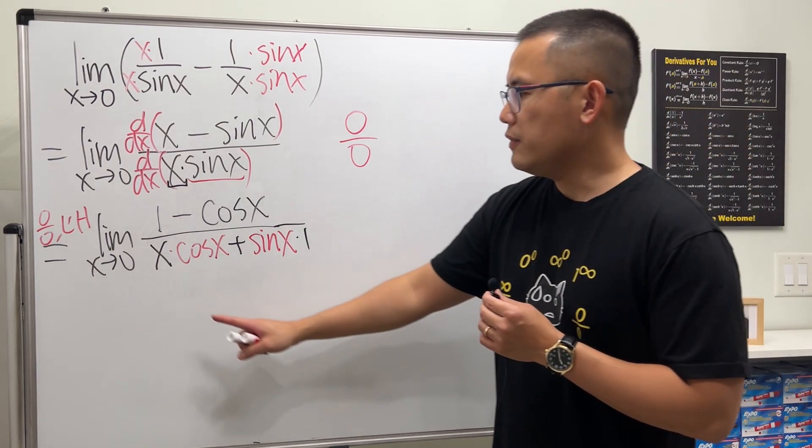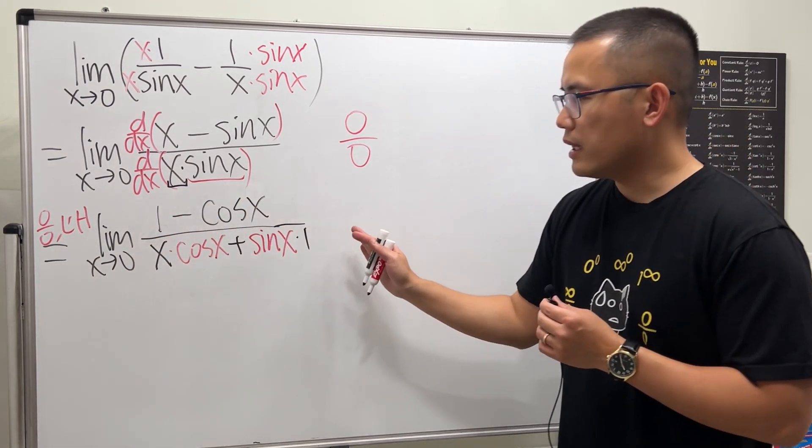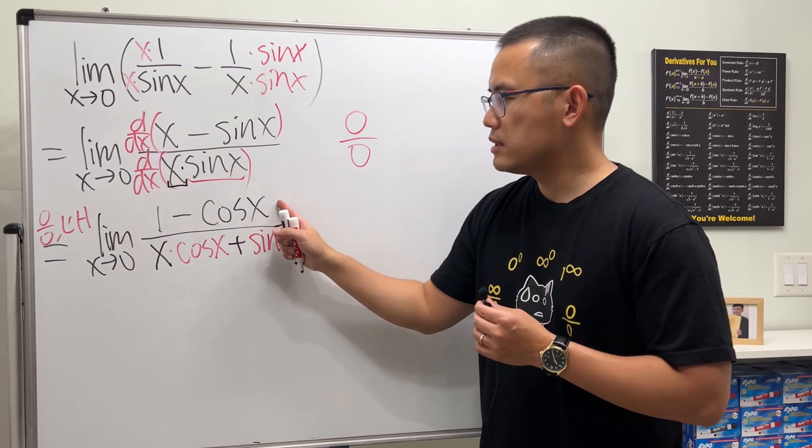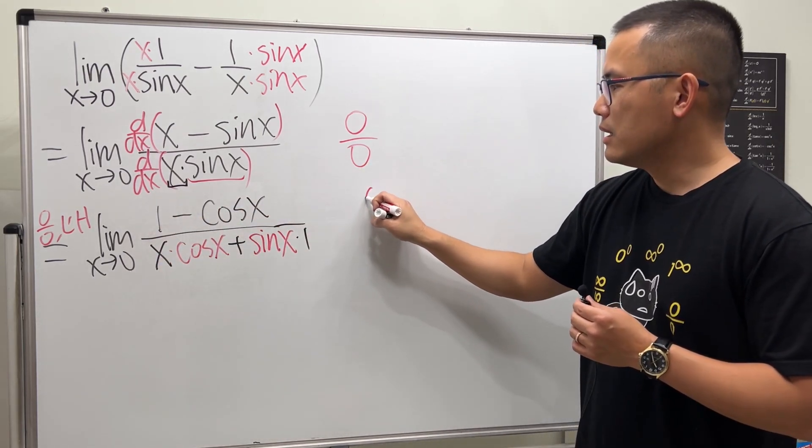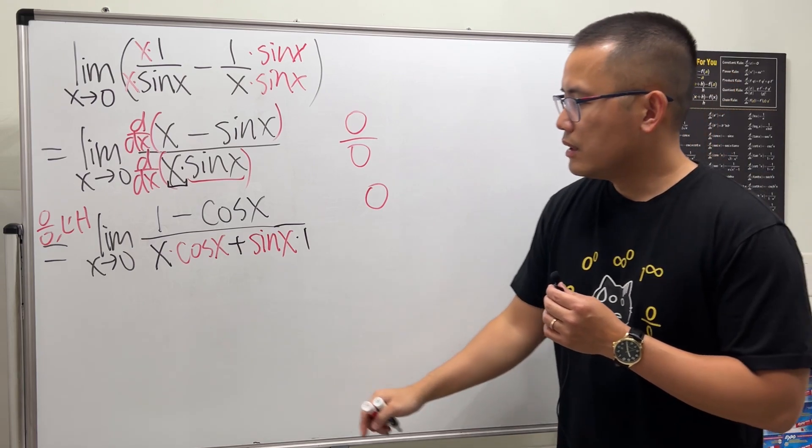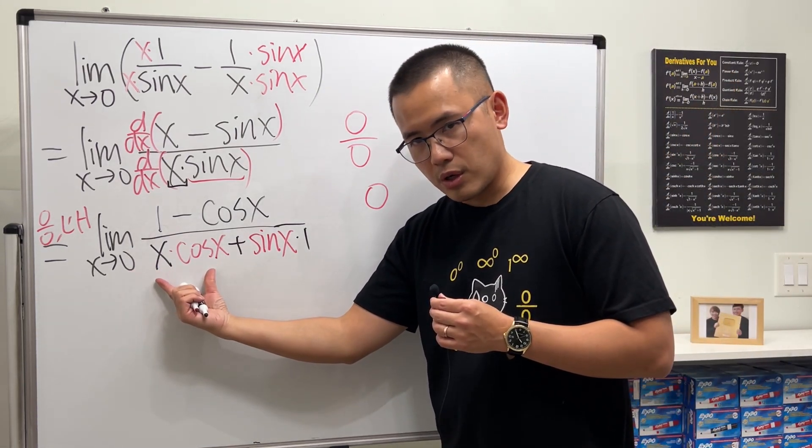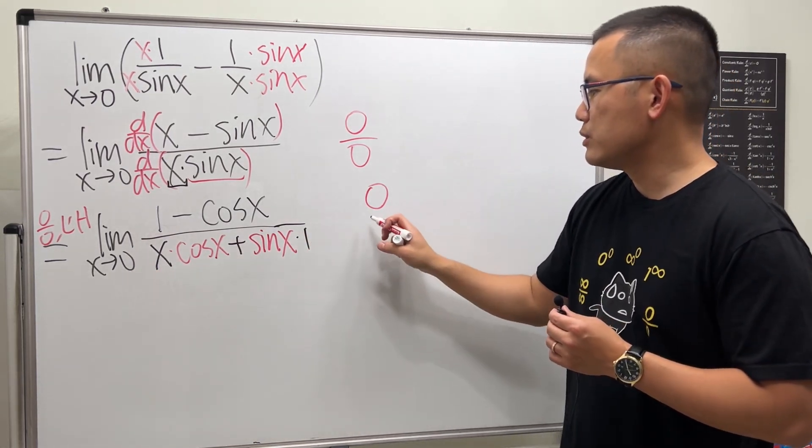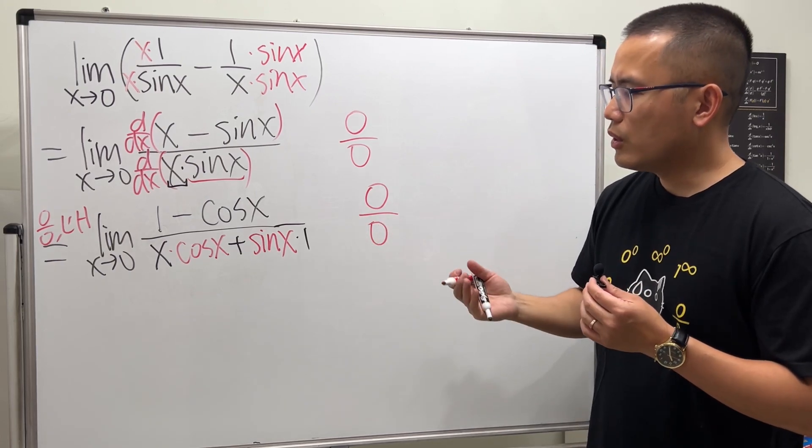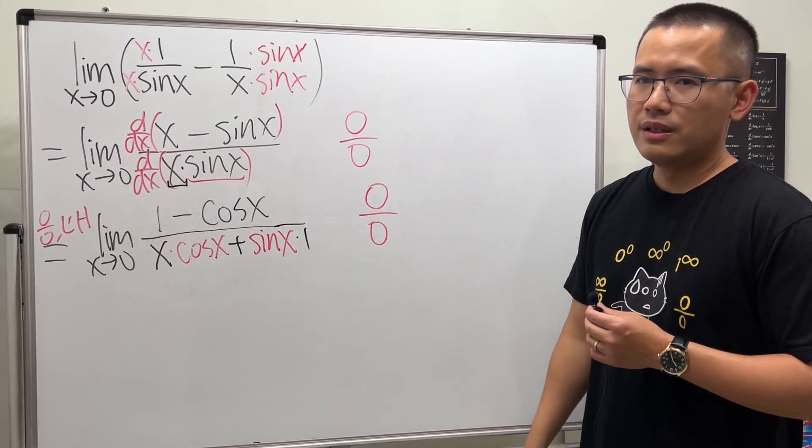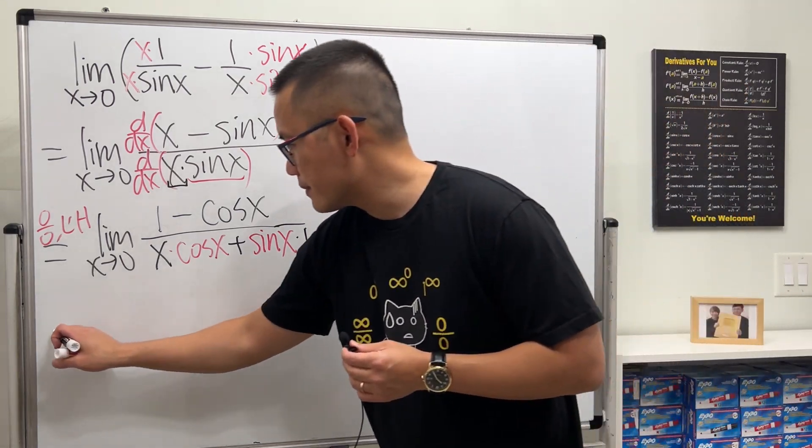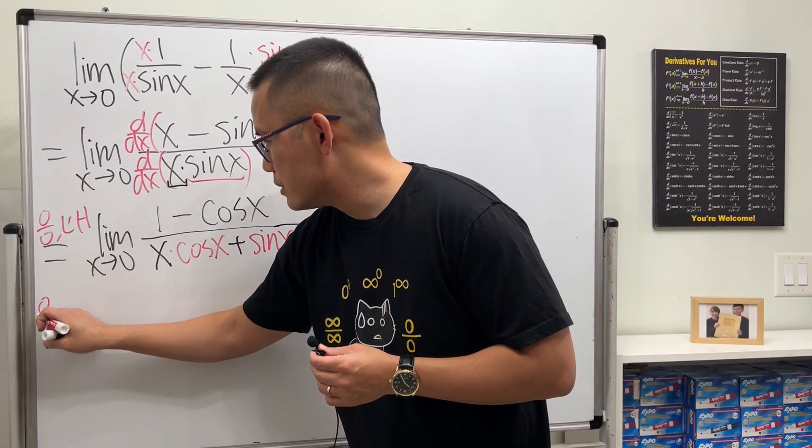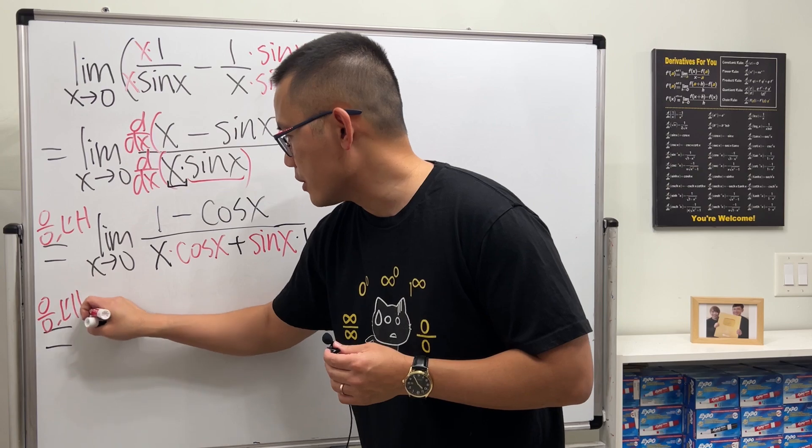Okay, now if we put zero into all the x's, cos(0) is one and we will just have one minus one on the top, again is zero. If we put zero in here that will be zero, if you put zero in here that will be zero. So we have zero over zero. L'Hôpital's rule again.